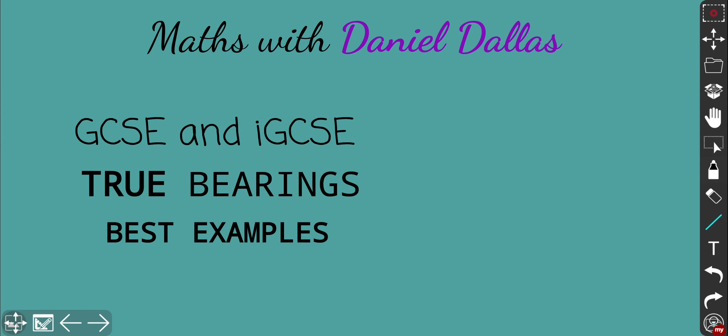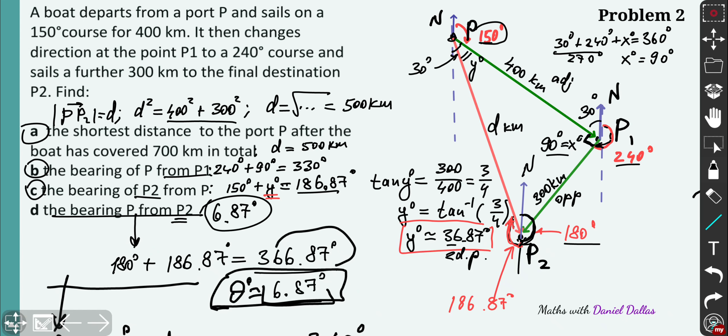However, in this case it's going to be a bit more tricky because the angle within triangle is not going to be 90 degrees, so your triangle is not going to be a right angle triangle as it was in the previous problem.